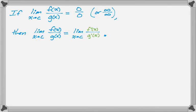That's essentially what L'Hôpital's Rule says. There are a bunch of things that go with it — hopefully you're in a calculus class and your teacher is discussing them with you. It's possible that after applying L'Hôpital's Rule the limit doesn't exist. It's possible you have to apply it more than once. There are some techniques you can use to create 0 over 0 or infinity over infinity, but this video is just about some examples.